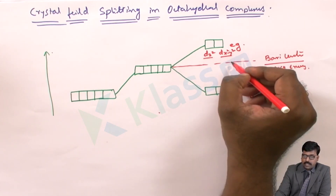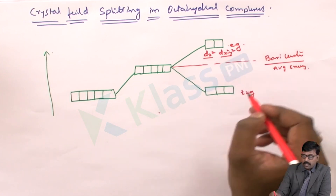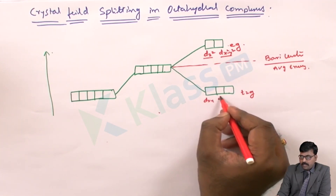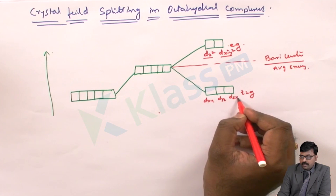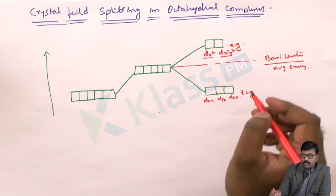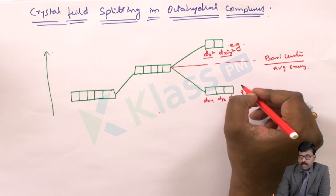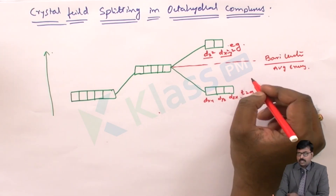Therefore, dz² and dx²-y² show the higher energy level, while dxy, dyz, and dzx show lesser energy, because the ligands are not approaching along the non-axial planes.